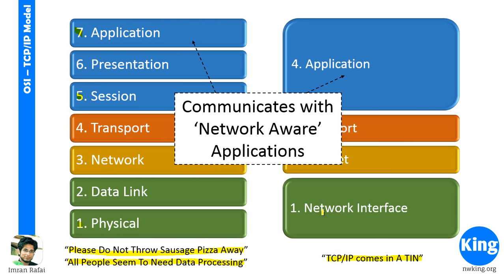The receiving layers strip the headers of the corresponding layers from the source. The data link layer removes the data link header and gives the information to the network layer. Similarly for segment 2. When segment 1 reaches the transport layer, the network header is removed. The transport layer waits until it receives all segments — it waits for segment 2. Then the transport layer strips all transport layer headers, combines the information, and gives it to the upper layers. The receiving side receives the same data. This is a basic representation of how a data network works.